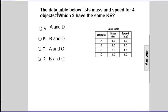All right, there's a data table listed, and it says the data table below lists mass and speed for four objects. The question is, which two have similar or the same kinetic energies?